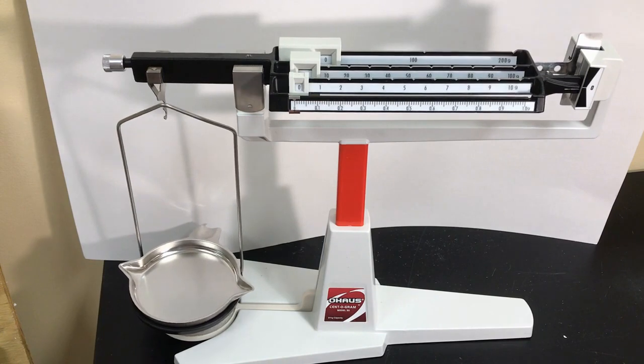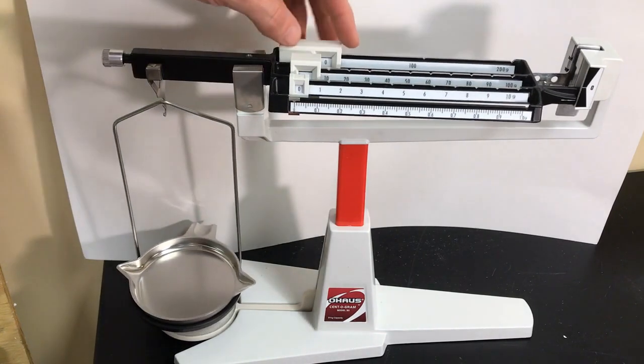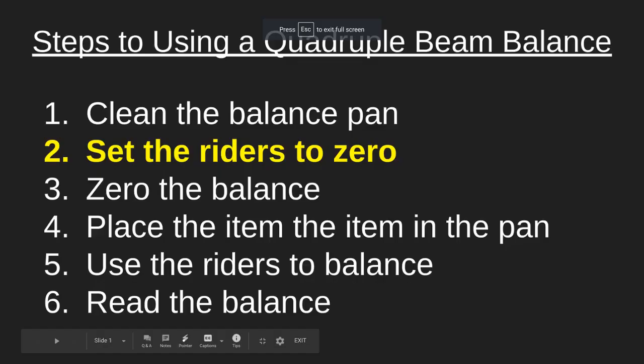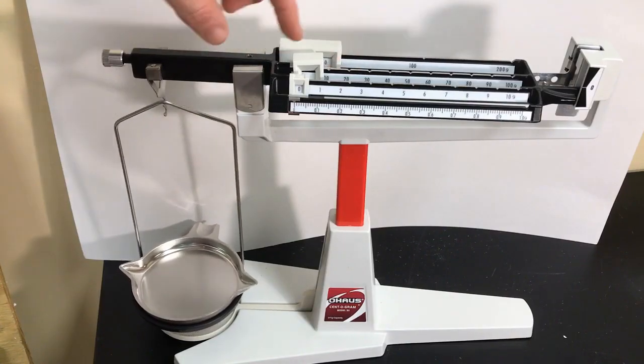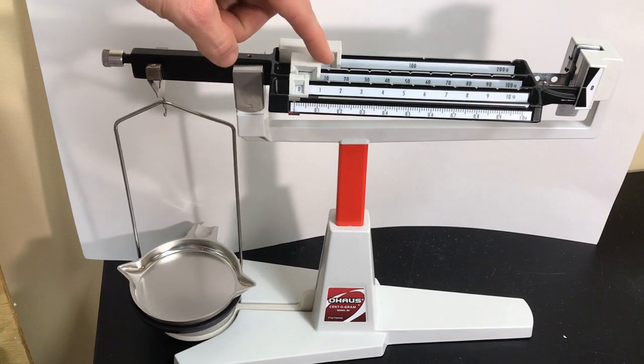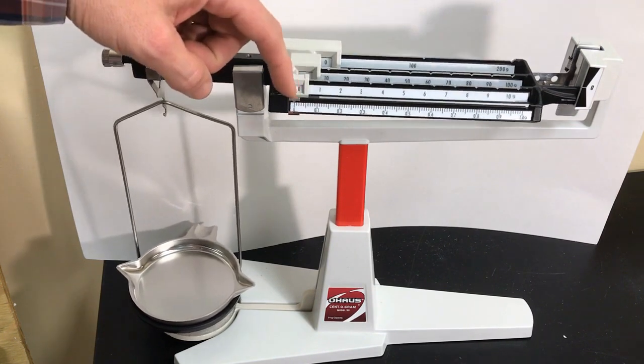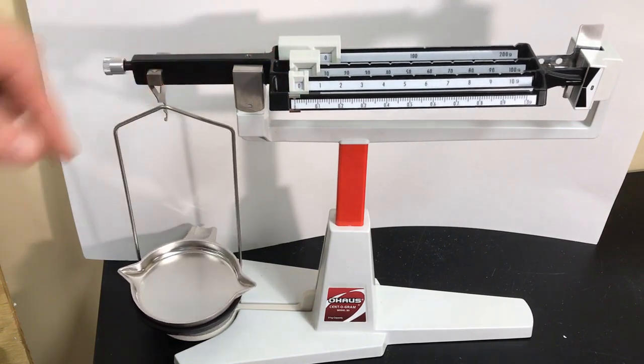Now you're ready for step two, which is to set all of your riders on zero. Because if it's off just a teeny bit on any of these, it's going to affect your reading. So all of these are on zero. That's good.